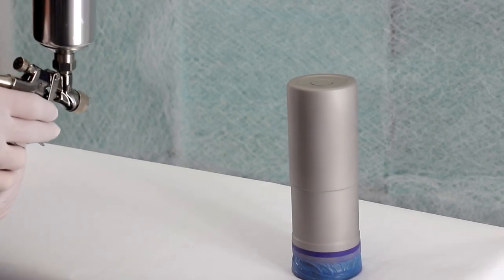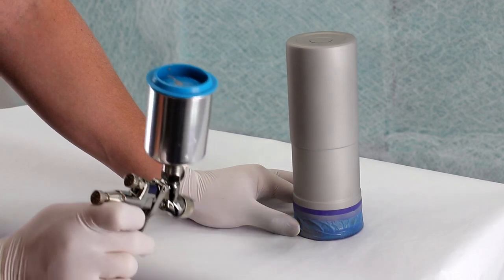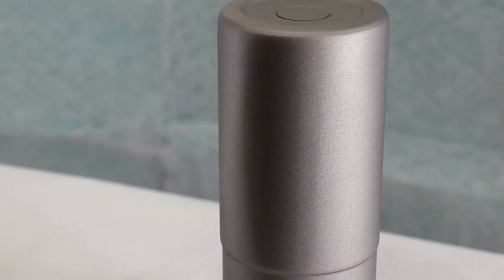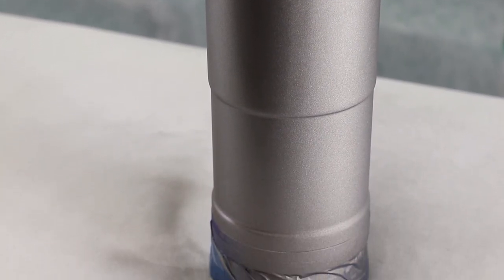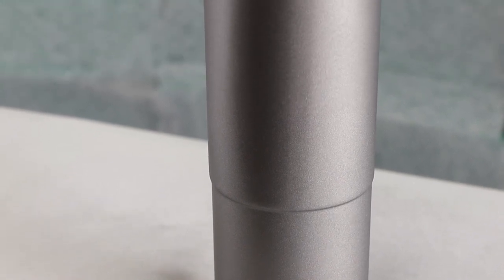Another common cause for dry spray is improper speed and distance from the part. Being too far away or moving too fast does not allow the coating to wet out properly, leaving a sandpaper-like texture.